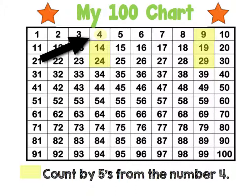So let's count by 5s from 4. We have 4, 9, 14, 19, 24, and 29 — and we could continue this pattern. If we counted by 5s from 4 and continued, the highlighter would go all the way down this column: 4, 9, 14, 19, 24, 29, 34, 39, 44, 49, 54, 59, 64, 69, 74, 79, 84, 89, 94, 99.